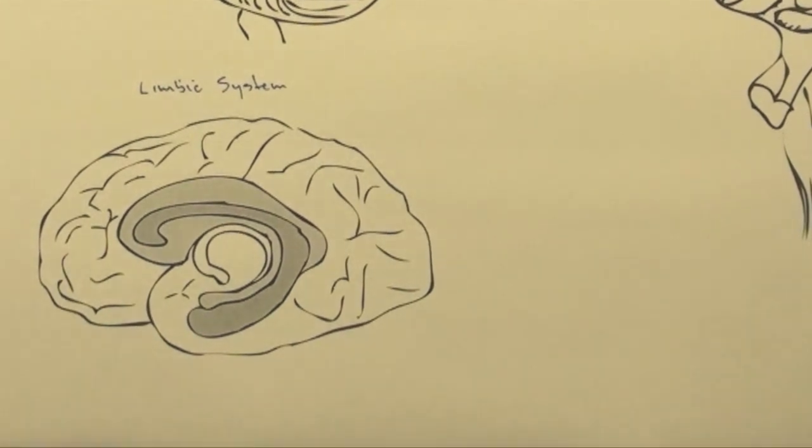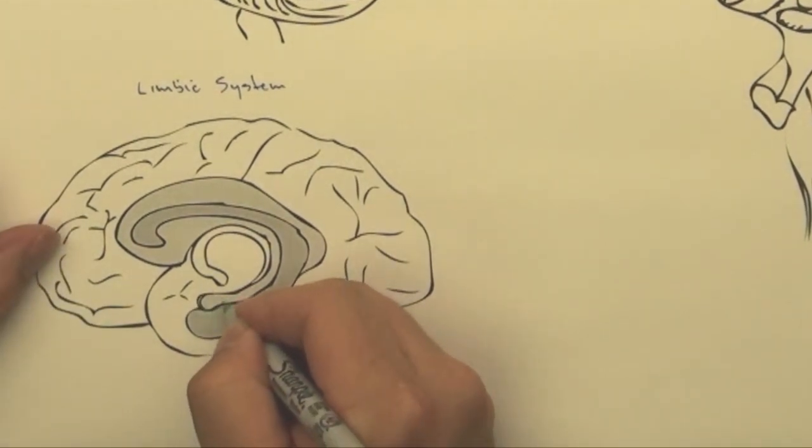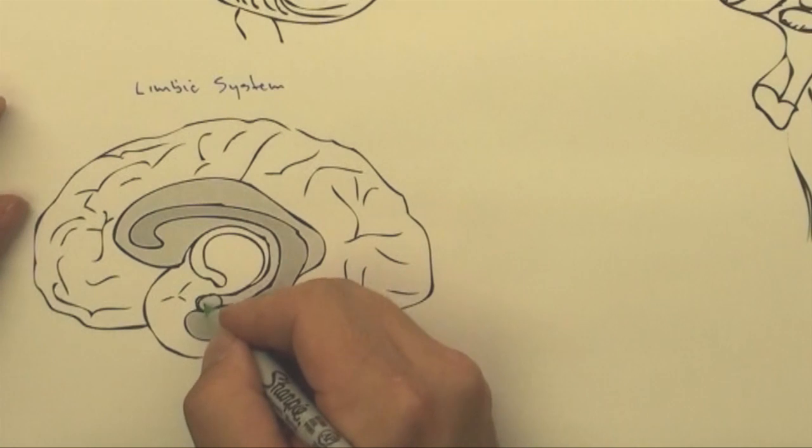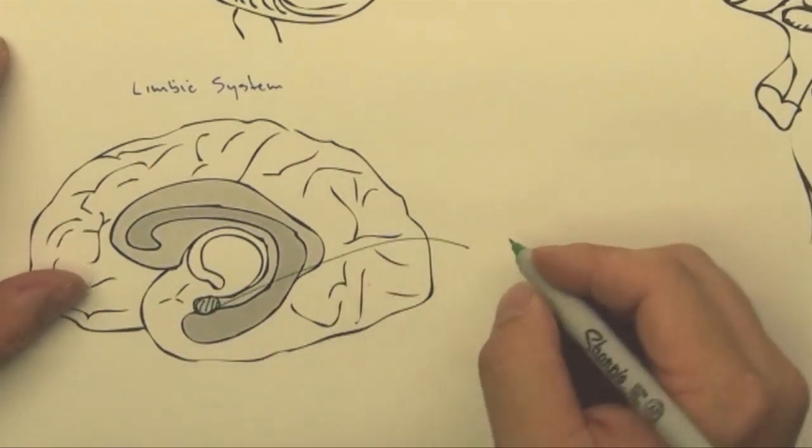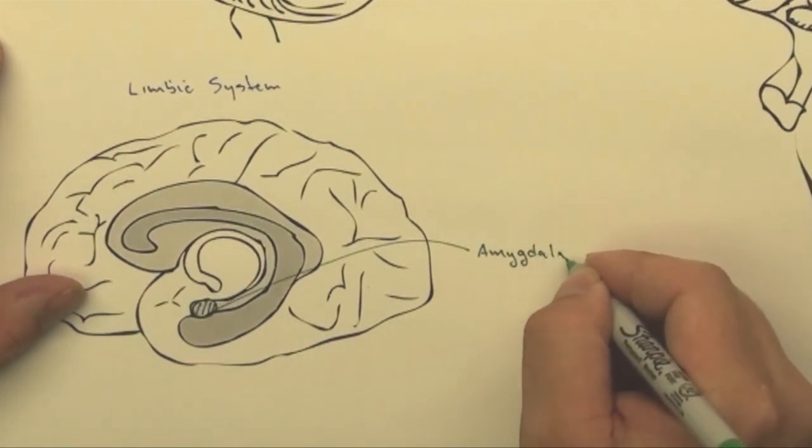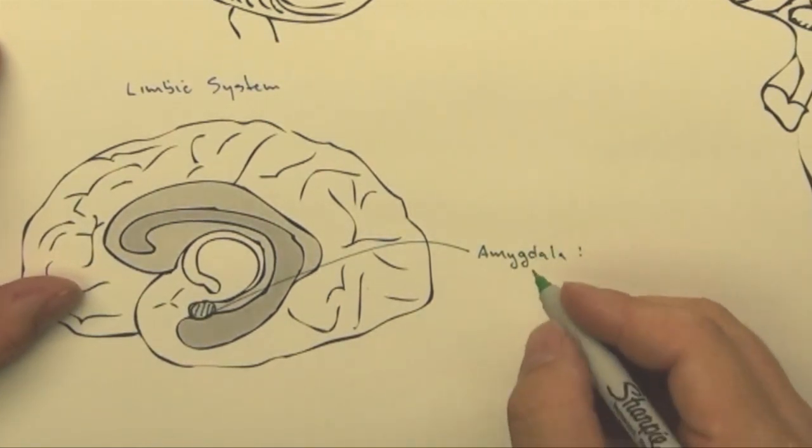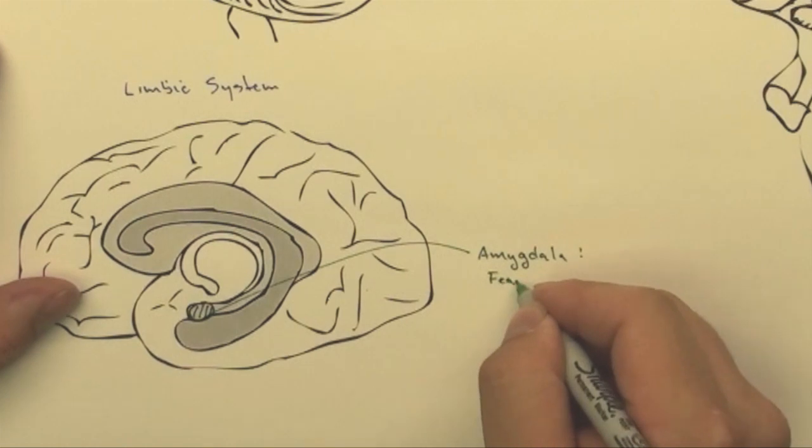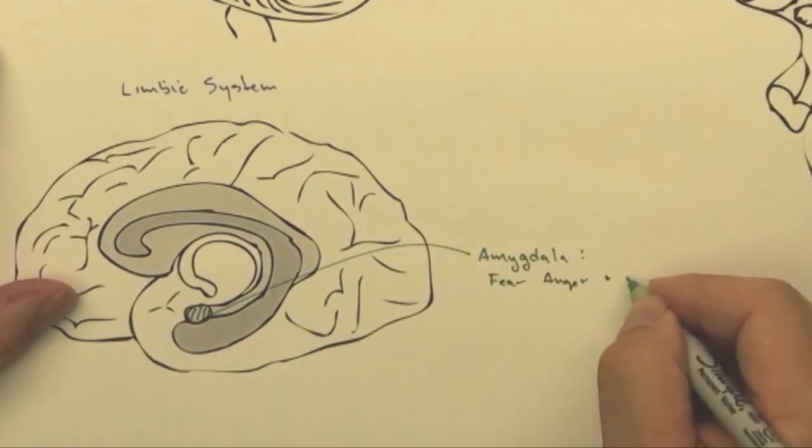I'm going to come down here to this guy, this one's kind of interesting. This is in what's called your limbic system, which might be generally called your emotional center. And this is called the amygdala. And the amygdala processes fear, anger, and danger.